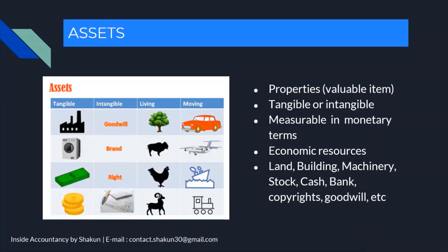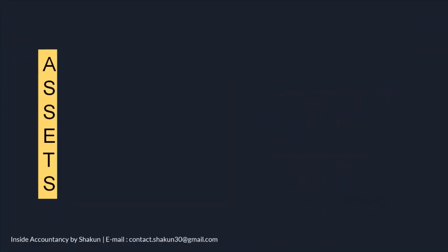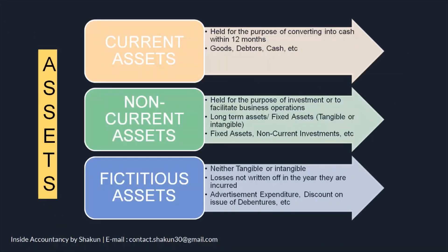Examples of assets include land, building, machinery, stock, cash in hand, cash at bank, and goodwill. Assets are future economic benefits — rights owned or controlled by an organization or individual — that should be tangible or intangible and measurable in monetary terms. Assets can be further classified as current assets, non-current assets, and fictitious assets.